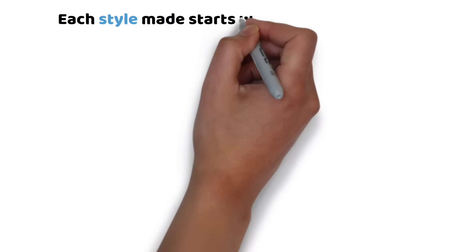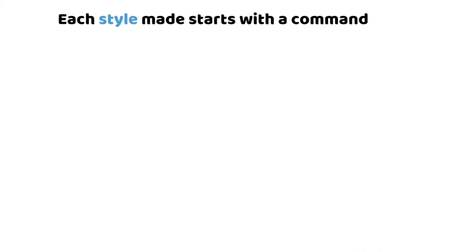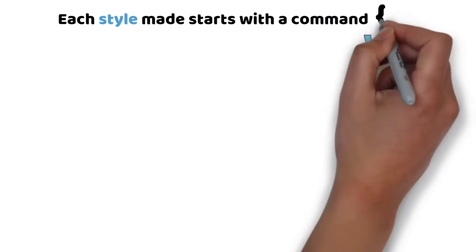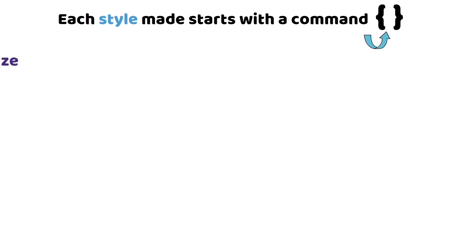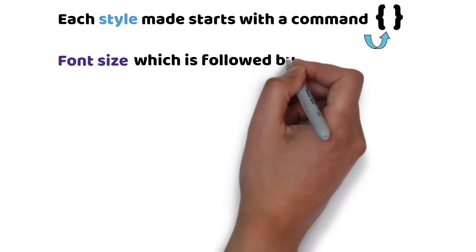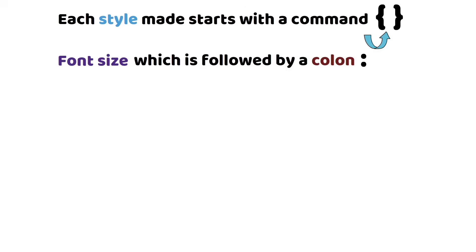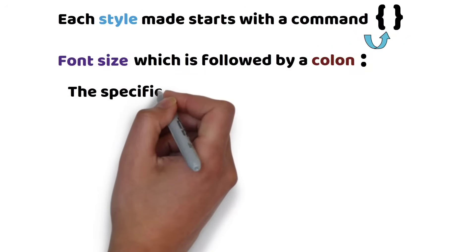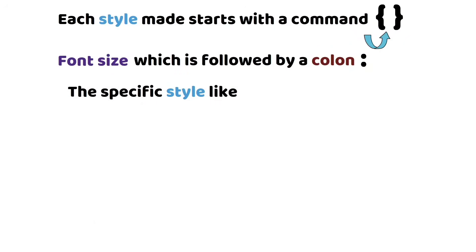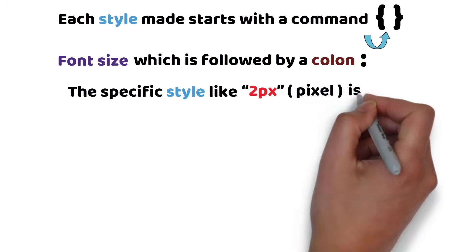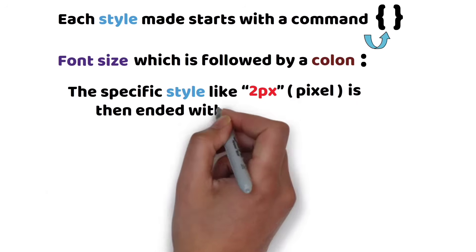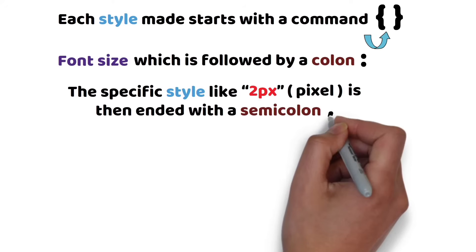Each style made starts with a command inside the curly brackets, such as font size, which is followed by a colon. The specific style, like 2px (pixel), is then ended with a semicolon.